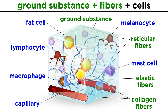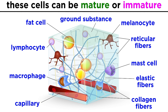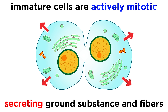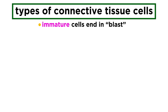With ground substance and fibers covered, that leaves us with the cells. These can be any of the varieties listed earlier, and they can either be mature or immature, the latter meaning they have not yet differentiated or specialized. In this actively mitotic state, they will secrete the ground substance and fibers characteristic of the cell type they will become, and these immature cells have different names from the mature cells, ending in the suffix -blast, which means they are forming.